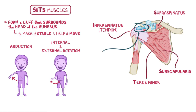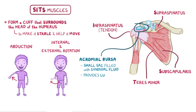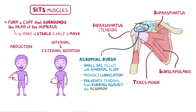Below the acromion lies the acromial bursa, which is a small sac filled with rubbery synovial fluid that provides lubrication and prevents the rotator cuff tendons — especially the supraspinatus tendon — from rubbing against the acromion as the joint moves.